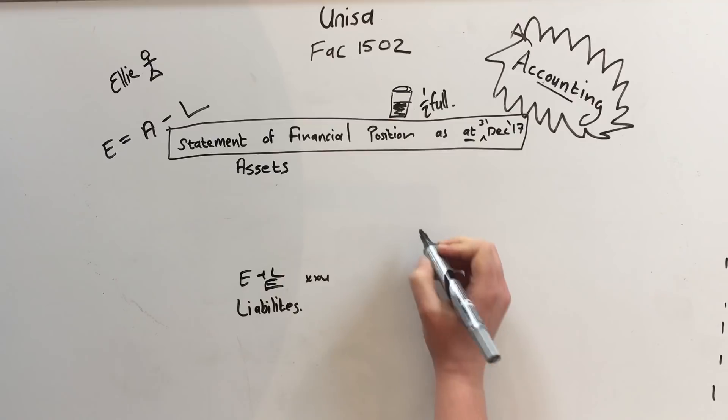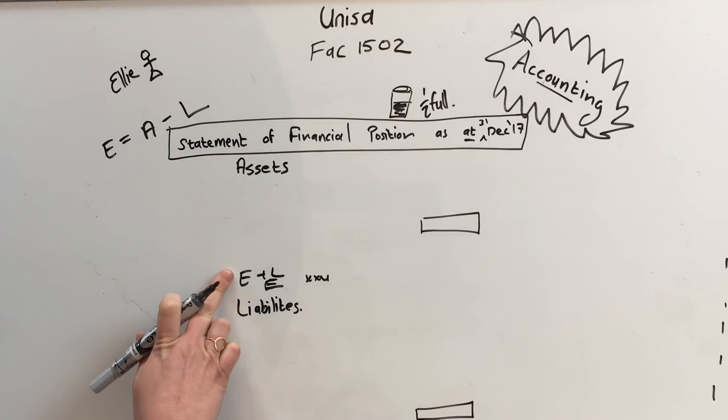Now the total for the assets over here will always be equal to the total over here for equity and liabilities. Those two will always be the same. So if this answer is 100 you can know for sure that this one must be 100.